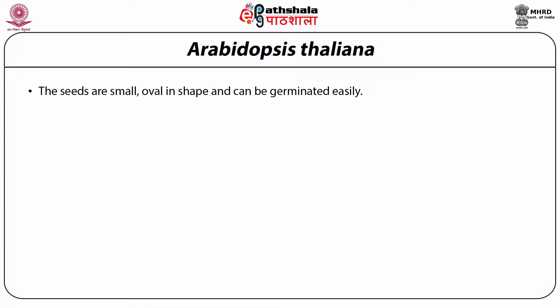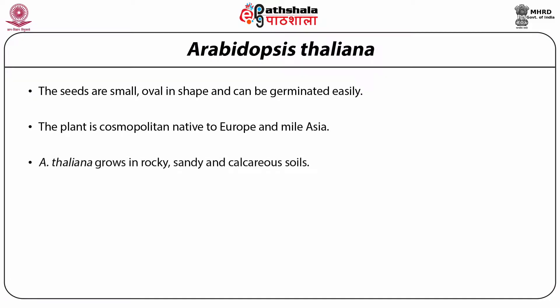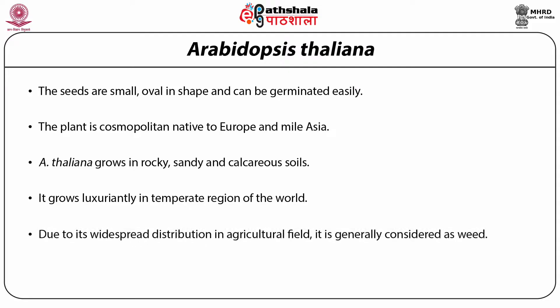Arabidopsis thaliana is an angiosperm, that is a flowering plant, which has been the organism of choice for many researchers due to its extensive contribution in plant physiology, biochemistry, developmental biology and genetics. It is a dicotyledonous annual plant about 20 to 25 centimetres tall. The leaves are found at the base and on the stem and are covered with trichomes. The seeds are small and oval and can be germinated easily. The plant is native to Europe and mild Asia, grows in rocky, sandy and calcareous soils, and is generally considered a weed in agricultural fields.